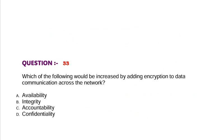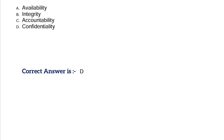Question: Which of the following would be increased by adding encryption to data communication across the network? Option A, availability. Option B, integrity. Option C, accountability. Option D, confidentiality. Correct answer is Option D.